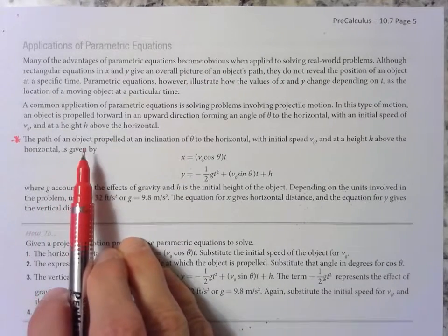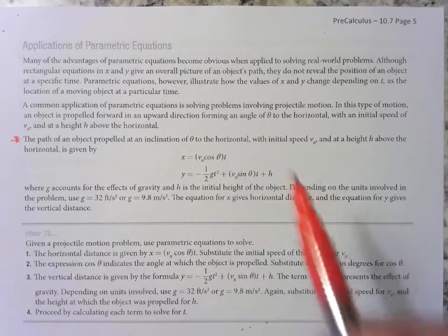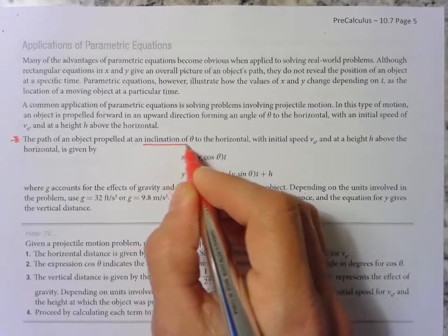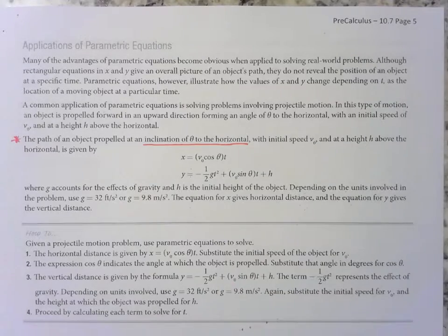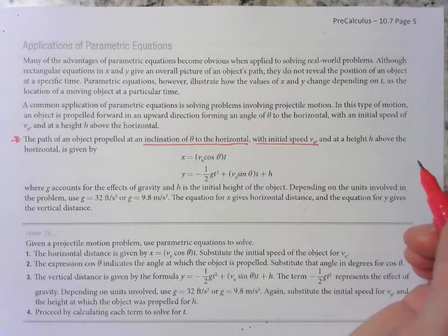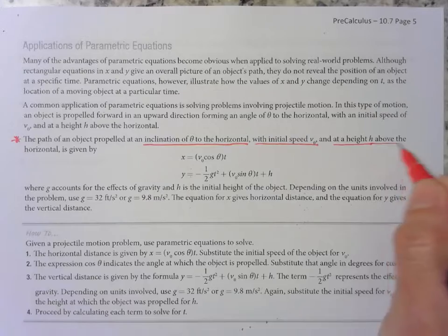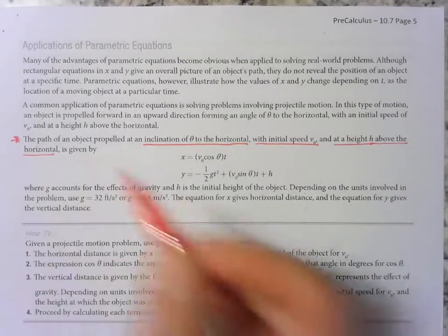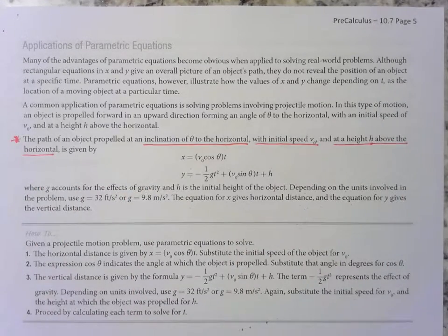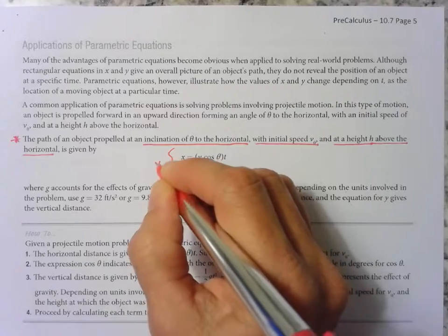So let's start with this part right here. The path of an object propelled at an inclination of theta to the horizontal. So this is going to be our angle. Some angle theta to the horizontal with initial speed v_0 at a height h above the horizontal. Most of the time that would be above the ground, but we have to define it as above the horizontal, is given by this pair of parametric equations.